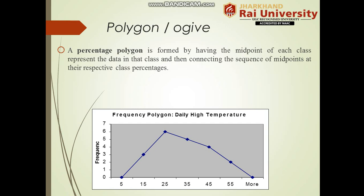Next is polygon or ogive. A percentage polygon is formed by finding the midpoint of each class, representing the data in that class, and then connecting the sequence of midpoints at their respective class percentages. For example, the class from 0 to 10 has a midpoint of 5, and the class with midpoint 15 follows similarly. All the midpoints are connected to form a polygon.